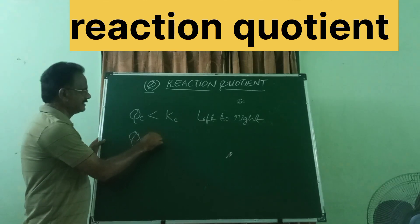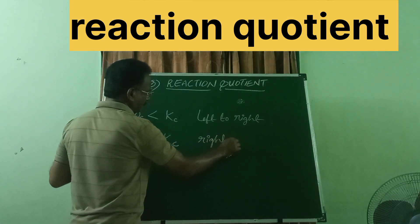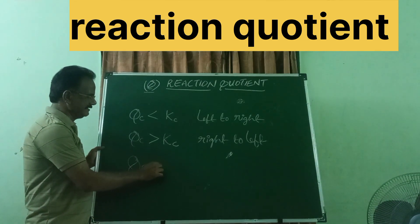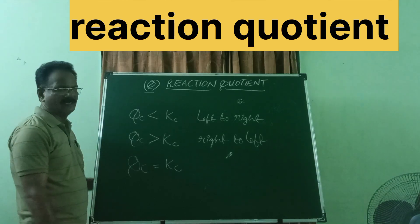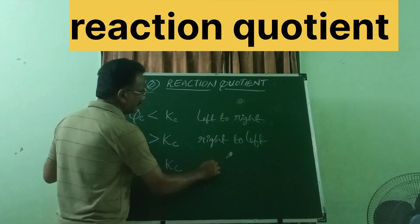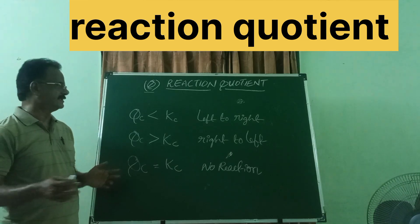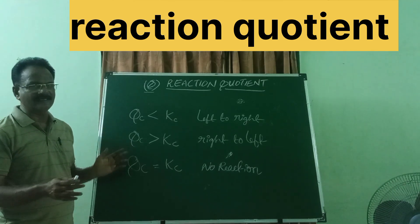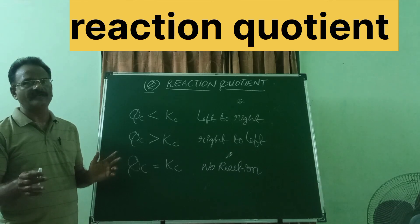If reaction quotient Qc is greater than the equilibrium constant Kc, the reaction will proceed from right to left. If Qc is equal to Kc — that means the magnitude of the reaction quotient equals the magnitude of the equilibrium constant — then no reaction takes place. So: if Qc is less than Kc, reaction proceeds left to right; if Qc is greater than Kc, reaction proceeds right to left; if Qc equals Kc, no reaction takes place. Thank you.